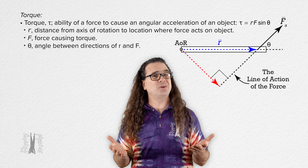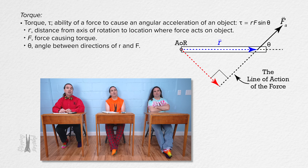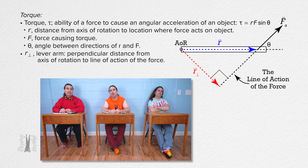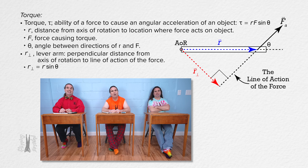Can one of you tell me what this line is called? It is called the lever arm, and the symbol for the lever arm is r with a subscript of perpendicular. The lever arm is the perpendicular distance from the axis of rotation to the line of action of the force. The equation for the lever arm is r-perpendicular equals r times sine theta. Another equation for torque is that torque equals the lever arm times the force.